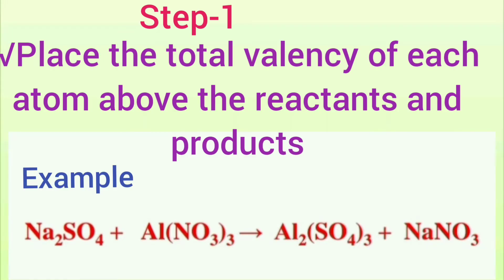In this chemical equation, in sodium sulfate, the total valency for sodium is two, for sulfate ion, two. In aluminum nitrate, the total valency for aluminum is three, for nitrate, three.